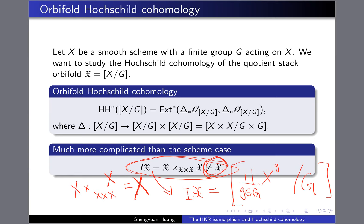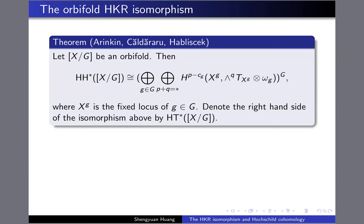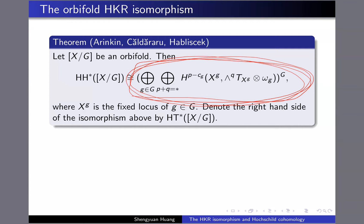To study the Hochschild cohomology, it is enough to study the derived fiber product. So we compute everything derived and put an R. The result is much more complicated. This is the theorem of Arinkin, Kaledin, and Haberichek: in the orbifold case, the Hochschild cohomology can be written explicitly in terms of this formula. This is called the orbifold version of the HKR isomorphism.